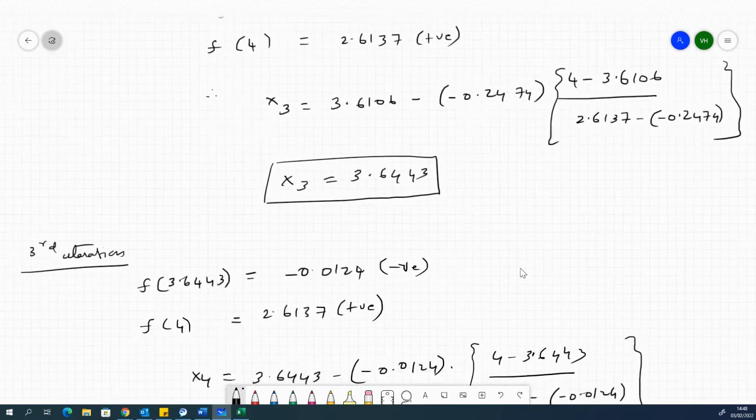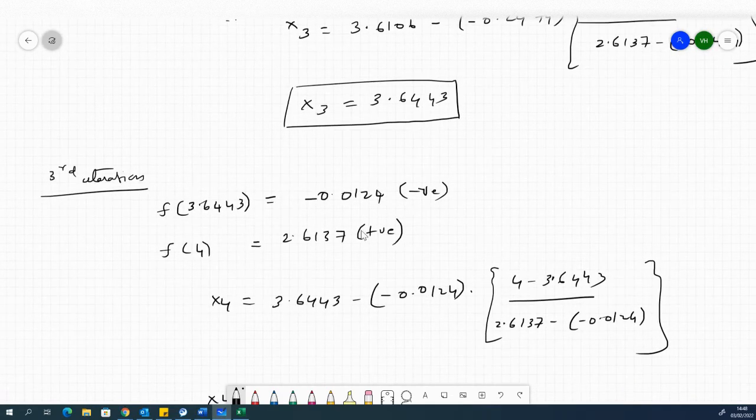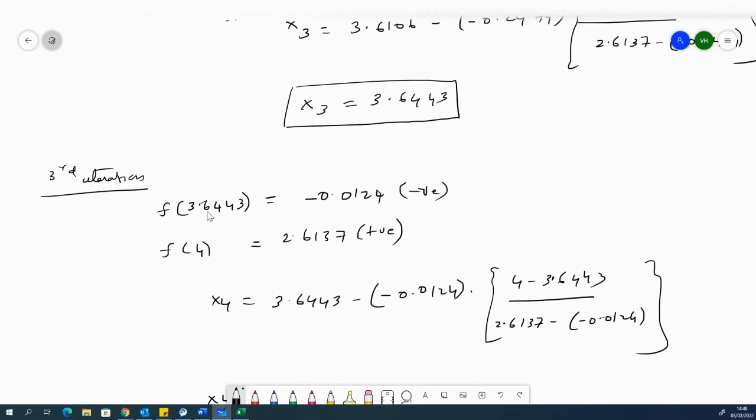And then if you substitute it again, you would see that for this value, f of 3.6443 would be negative. Therefore, the root is between 3.6443 and 4.